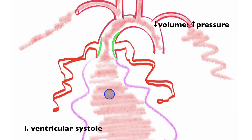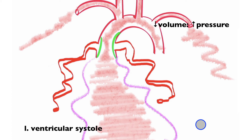So blood doesn't have access to the coronary arteries during ventricular systole. The second factor impacting blood flow to the myocardium during ventricular systole is the crimping or occlusion of the coronary arteries — kind of like bending a hose. During ventricular contraction, the squeezing of the heart crimps or occludes these vessels, making their volume so small that blood can't flow through to the myocardium. So blood flows through the coronary arteries to the myocardium during left ventricular diastole, and does not during left ventricular systole, when the rest of the body is being perfused with oxygen-rich blood.